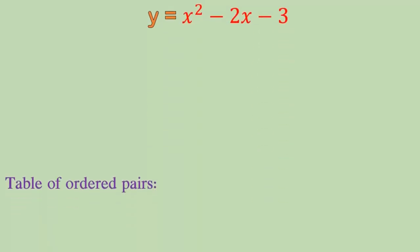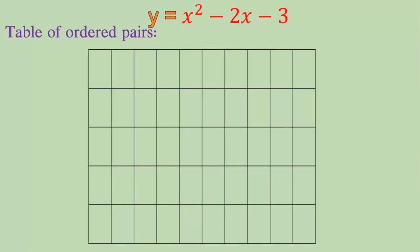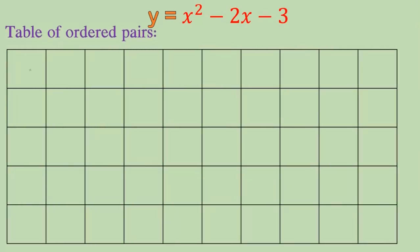For this, first of all, we have to prepare a table of ordered pairs. In the first row, take the x value. The second, third, and fourth rows correspond to the problem x squared minus 2x minus 3. In the last row, take the value of y.